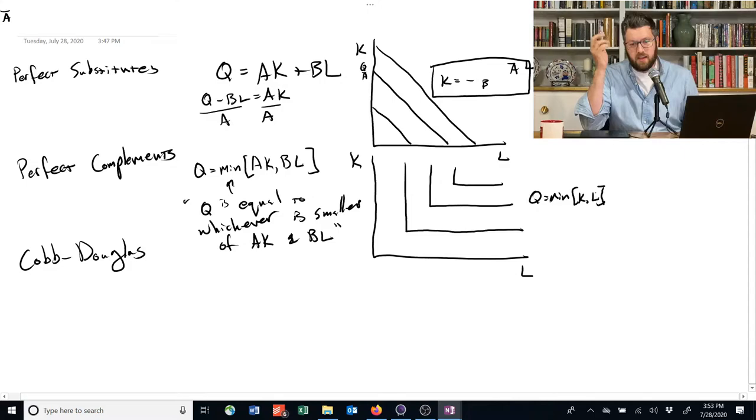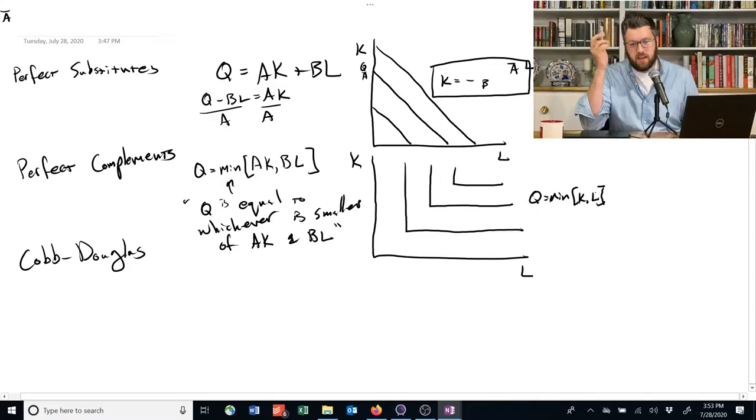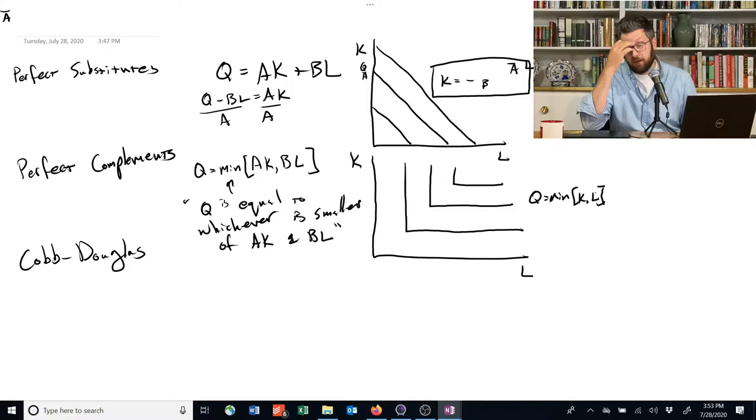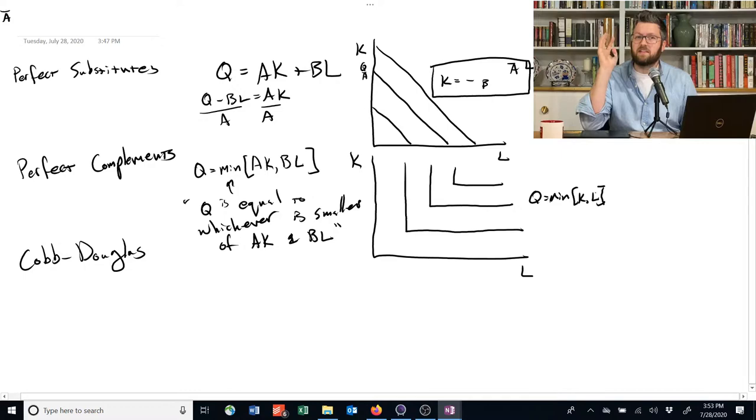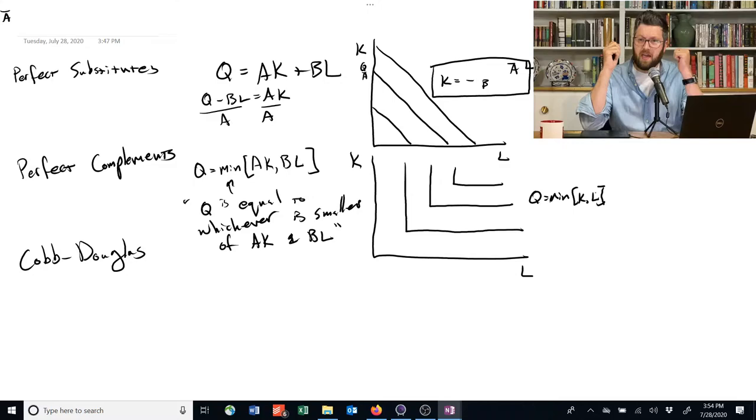If that's the case, then if k is equal to 10 and l is equal to 1, the minimum of those two is 1, and so Q is equal to 1. If k was equal to 1 and l was equal to 10, then the minimum of those two is still 1. And the idea here is that these things are perfect complements, and that means that capital and labor have to be paired together in exactly the right proportion, and having a little bit of extra outside that proportion is useless.